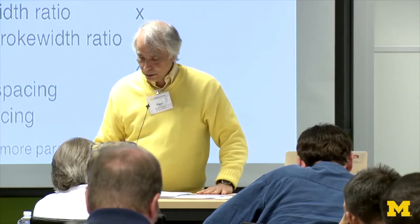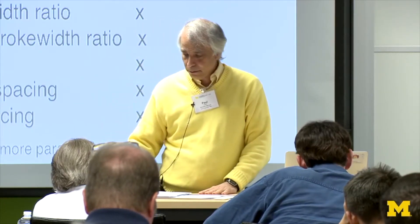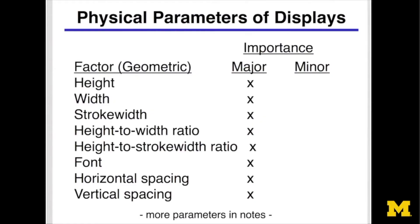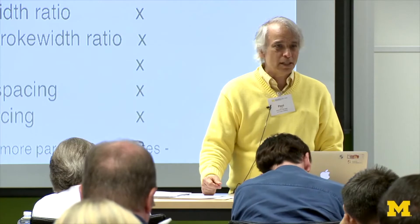For displays, there are a number of physical parameters that matter geometrically. For characters, the most important thing is the height. If it's tall enough and you get enough contrast, you're good. Yes, narrow versus wide matters, but not as much as height. Stroke width — the width of the line — matters, but not as much as height. So number one is: get the height.